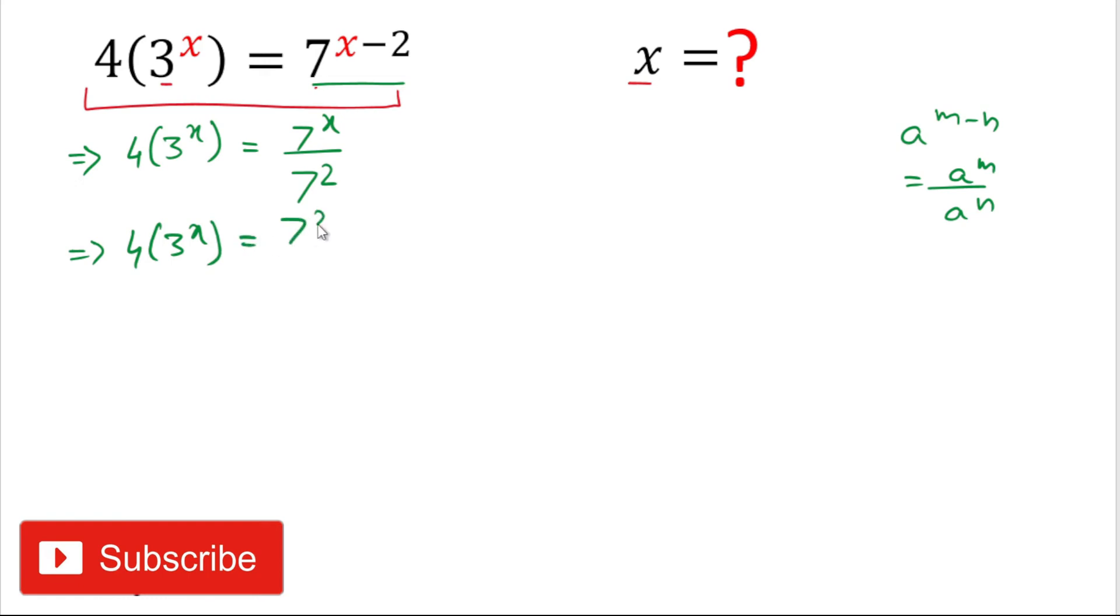7 squared is 49. Now for simplifying, we will cross multiply. It becomes 7 to the power x equals 49 times 4 and 3 to the power x.